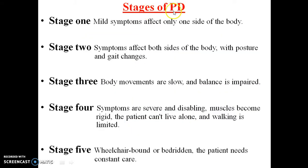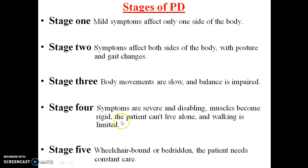The stages of Parkinson's disease: Stage 1 — mild symptoms affect only one side of the body. Stage 2 — symptoms affect both sides of the body with posture and gait changes. Stage 3 — body movements are slow and balance is impaired. Stage 4 — symptoms are more severe; the muscles become rigid, the patient cannot live alone, and walking is limited. In the final stage, a person is completely dependent and needs constant care.